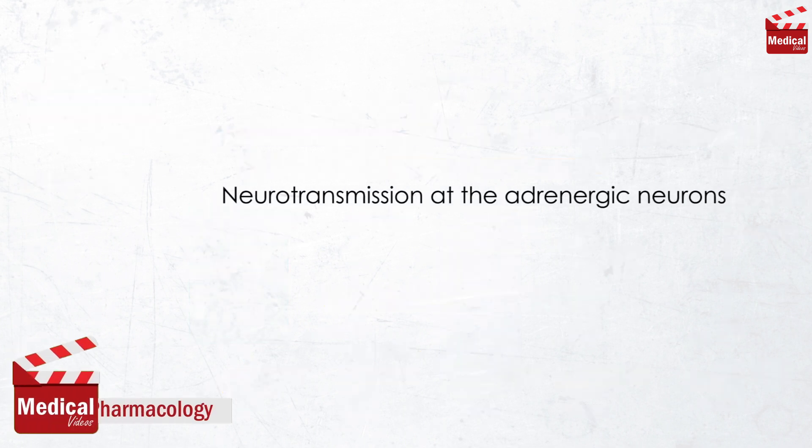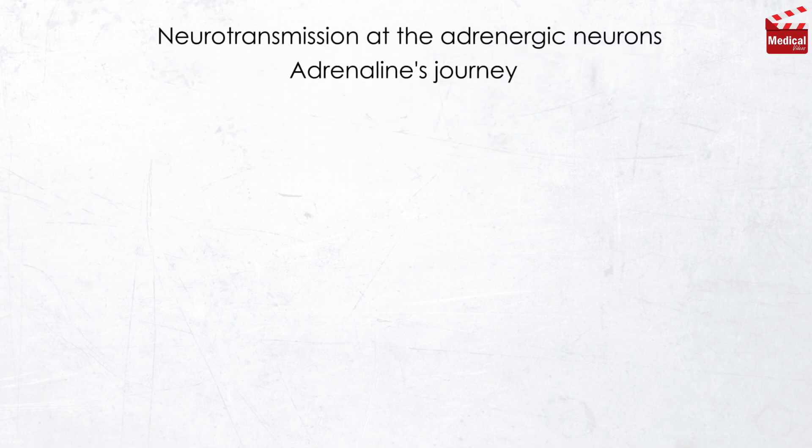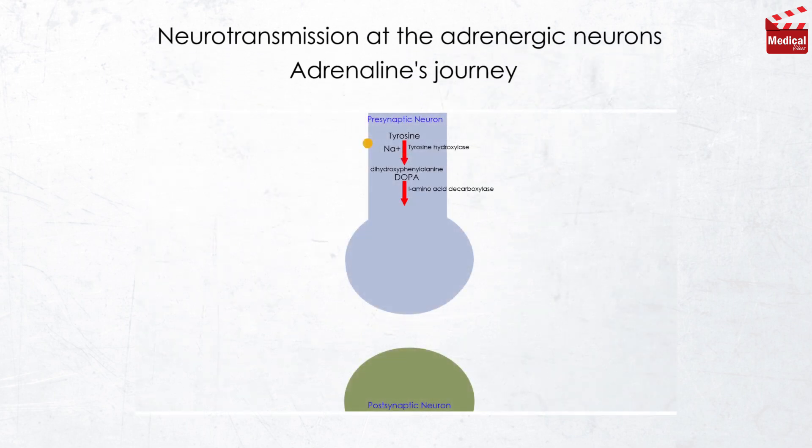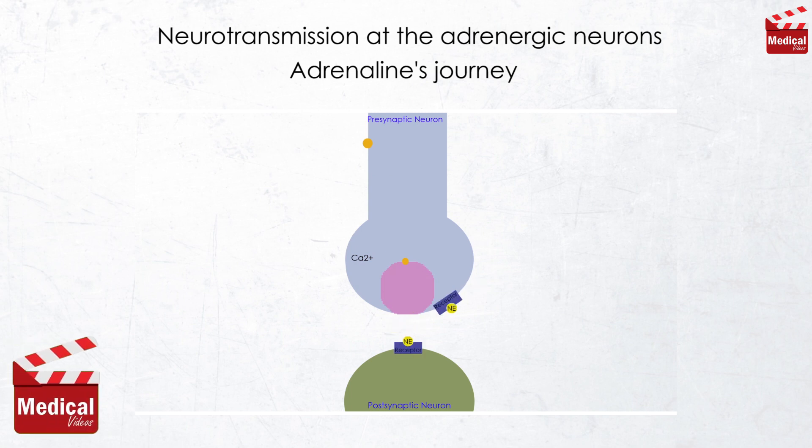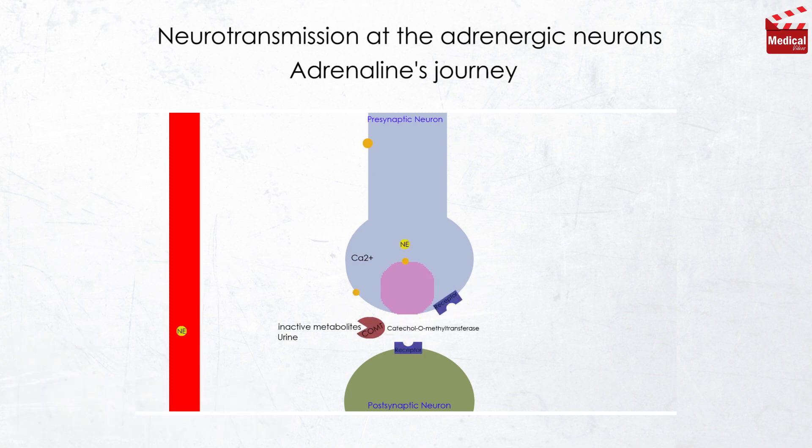Now let's discuss the neurotransmission at the adrenergic neurons, or as I'm calling it, the adrenaline's journey. This journey involves synthesis of dopamine, followed by noradrenaline then adrenaline, then storage, release and binding to receptors, followed by removal of the neurotransmitter from the synaptic cleft.